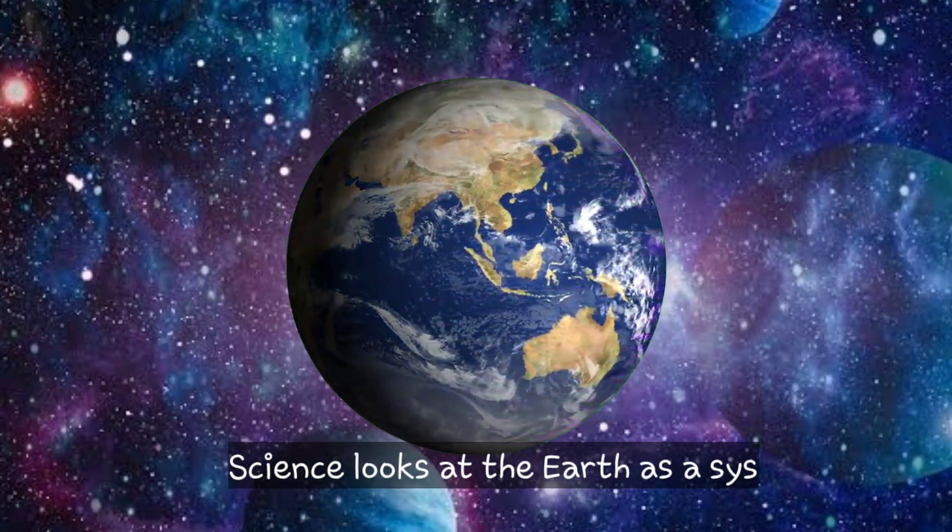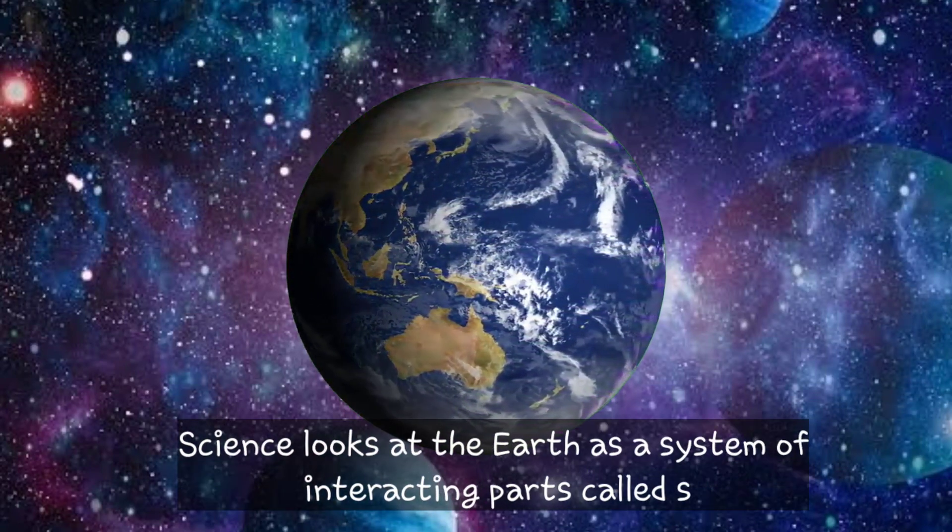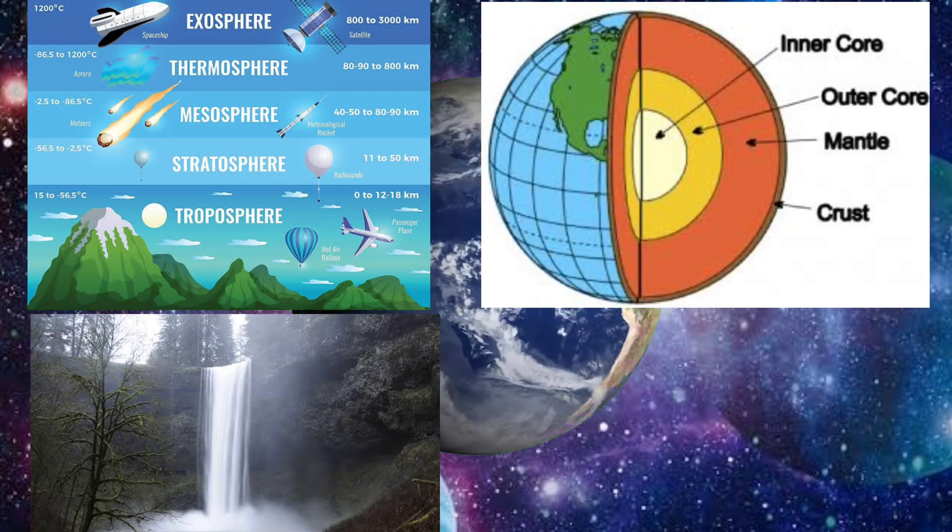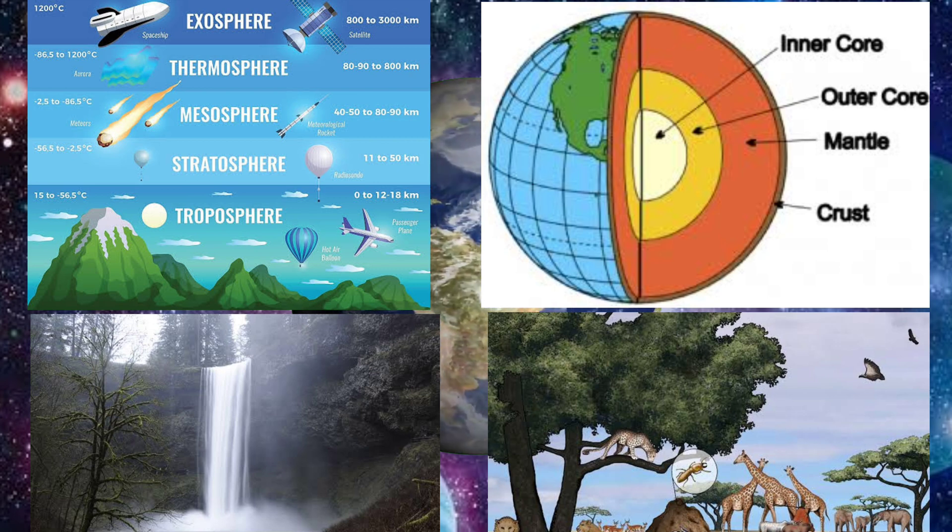Science looks at the Earth as a system of interacting parts called subsystems. Each subsystem can be studied separately, but they are dependent on and connected with the other subsystems.